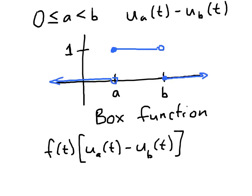What this would do is this part inside the brackets would be 1 only from a to b and would be 0 elsewhere. So we'd end up with the function f showing up between a and b and then we'd have the function 0 everywhere else.